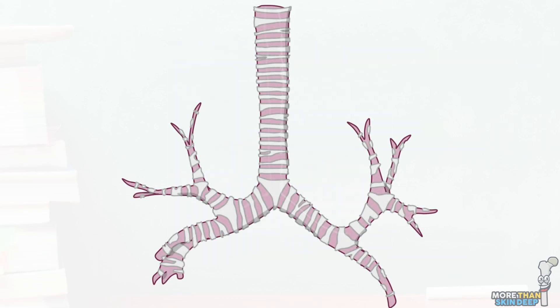The trachea is a midline tubular structure that starts at the inferior part of the larynx. It runs down the neck and into the thorax and lies just anterior to the oesophagus along its whole route.